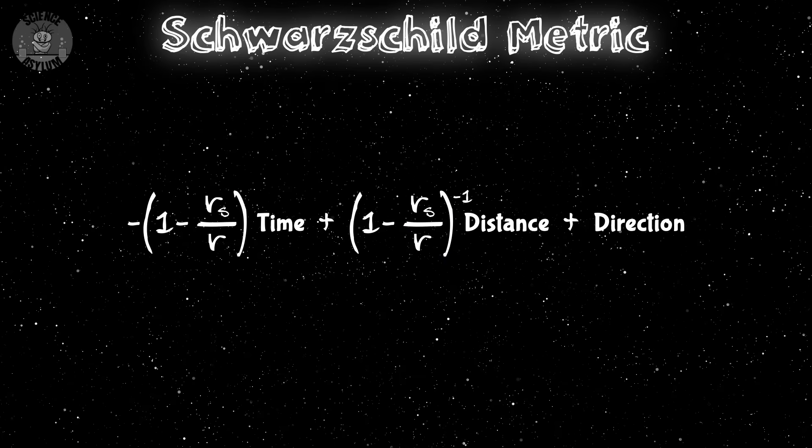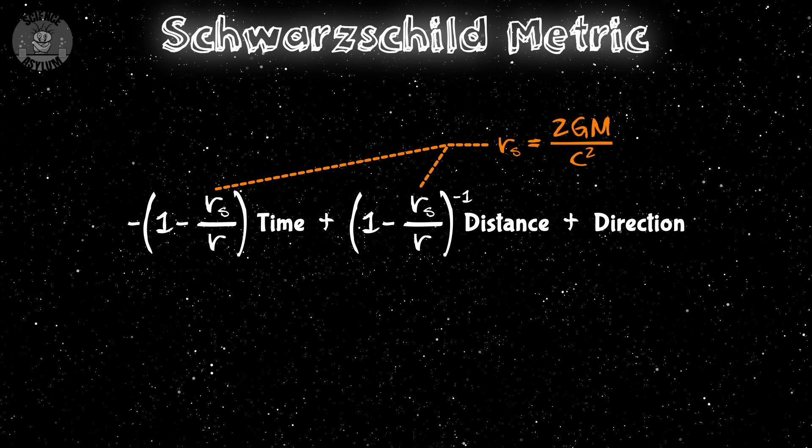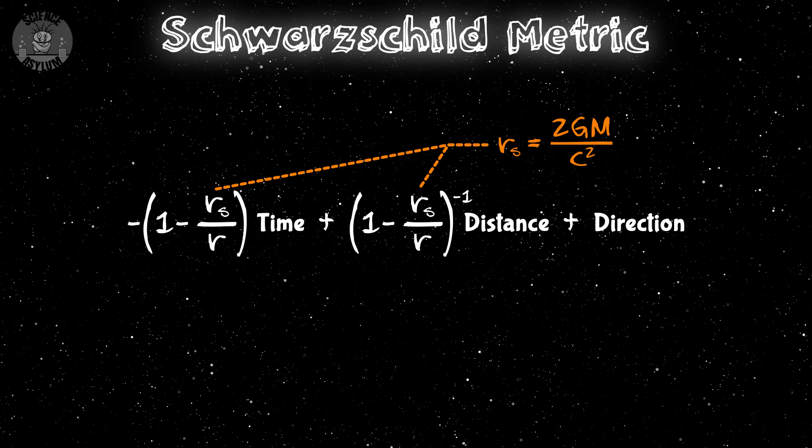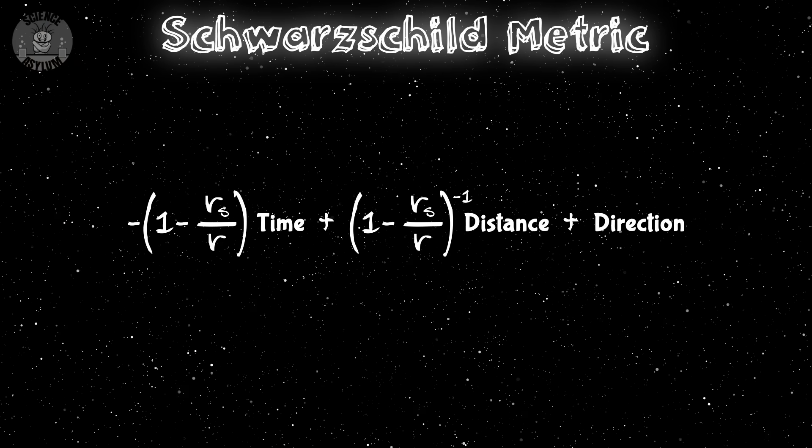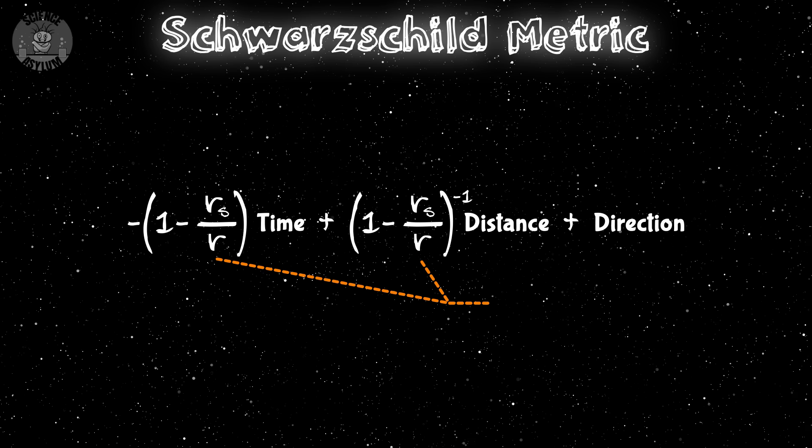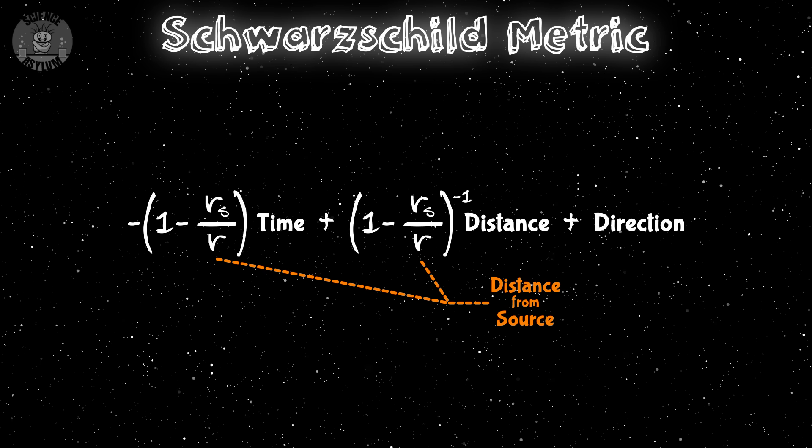The space-time geometry around any non-rotating spherical object is described by something called the Schwarzschild metric. OMG, I actually said it right that time. This tells us how far apart nearby events are in time and space. You can see that depends on how close you are to the source of curvature.